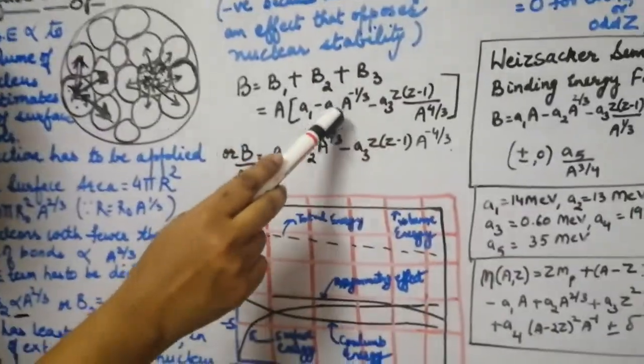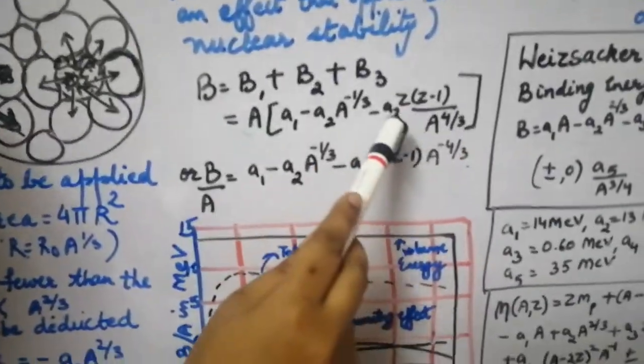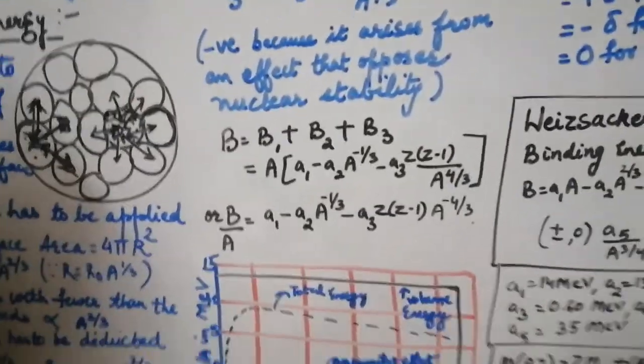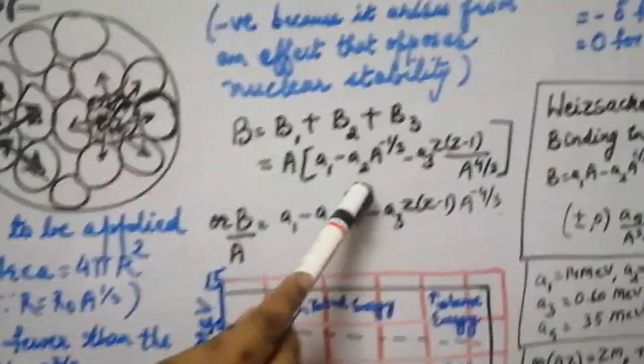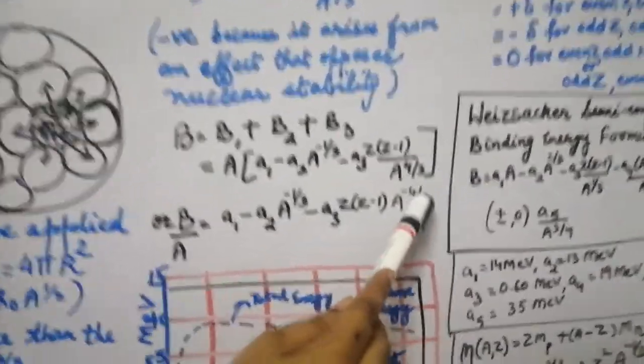Adding the three contributions, the total binding energy B = B1 + B2 + B3. Substituting: B1 = a1·A, B2 = −a2·A^(2/3), B3 = −a3·Z(Z−1)/A^(1/3). Dividing by A, the binding energy per nucleon is: B/A = a1 − a2·A^(−1/3) − a3·Z(Z−1)·A^(−4/3). These were the binding energy per nucleon contributions from the first three factors.